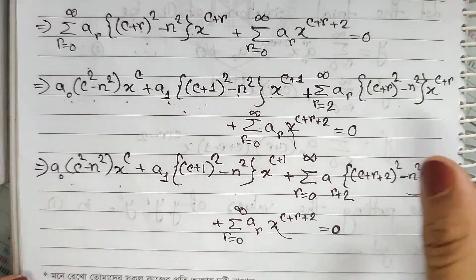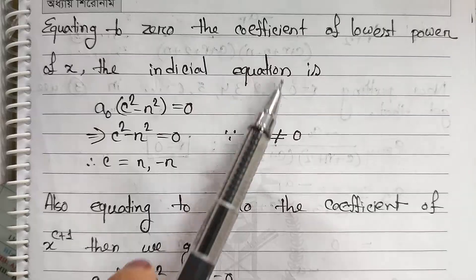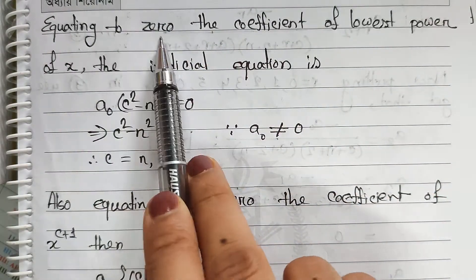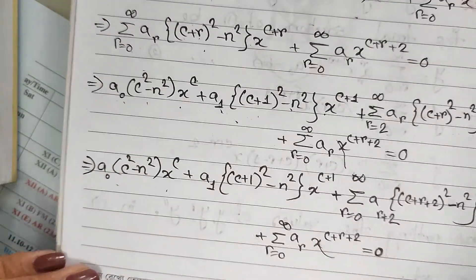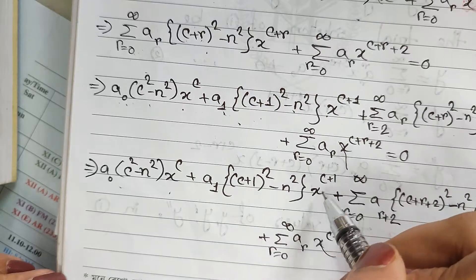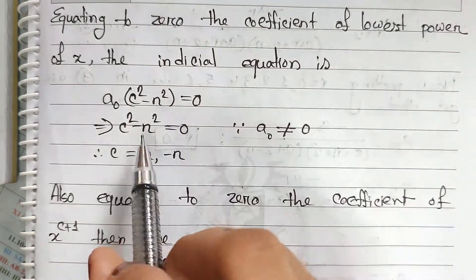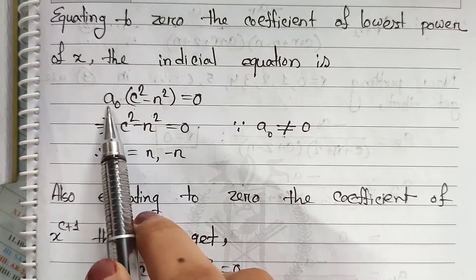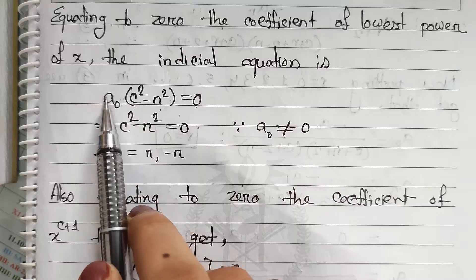The coefficient of the lowest power of x: this equation gives the lowest power of x. So what do you think of 0? Here, x to the power c is the lowest power. So the coefficient is equal to 0. So if c is equal to 1, it is equal to 0. When the first value of c is equal to 0, and the coefficient is equal to 0, this means a₀ is equal to 0.